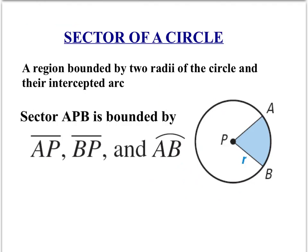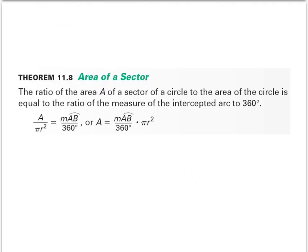Now that we can find the area of a circle, let's look at finding the area of part of a circle, or a sector of a circle. Sector APB is bounded by lines AP, BP, and arc AB. Theorem 11.8 is about the area of a sector. We can set up a ratio to find the area of a sector, because the area of a sector is equal to the ratio of the measure of the intercepted arc to 360 degrees.